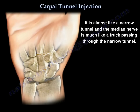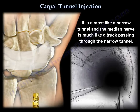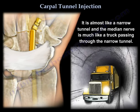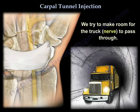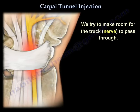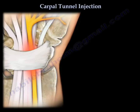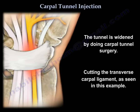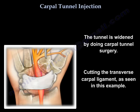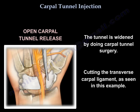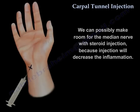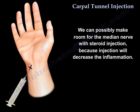It's almost like a narrow tunnel, and the truck is trying to go through that narrow tunnel. We're trying to make room for the truck by opening the tunnel — this is the carpal tunnel surgery, by cutting the transverse carpal ligament. Or we can possibly make room for the nerve by steroid injection, because it decreases the inflammation.